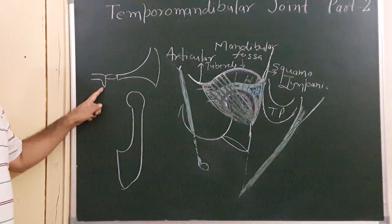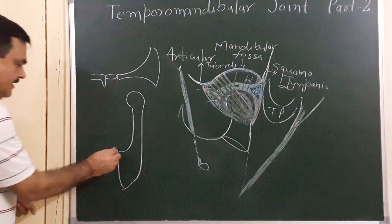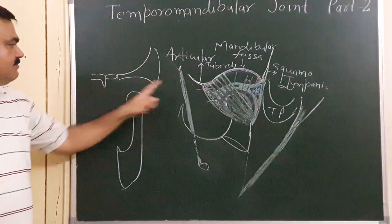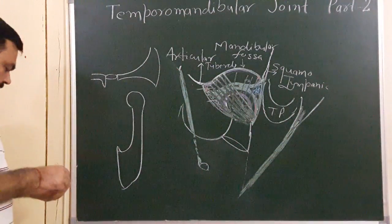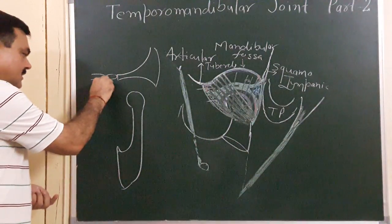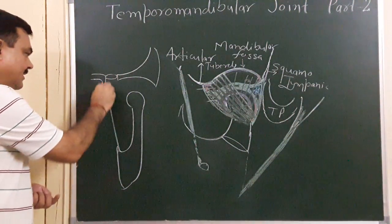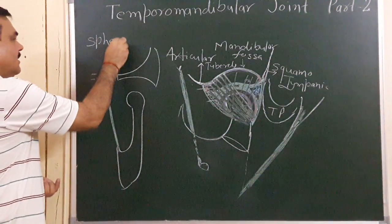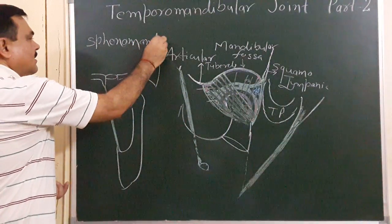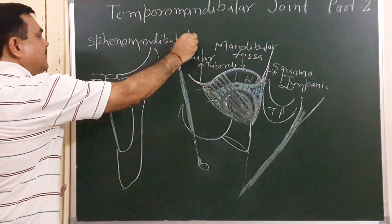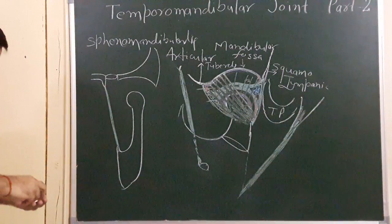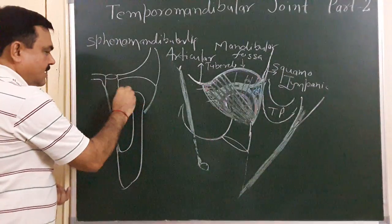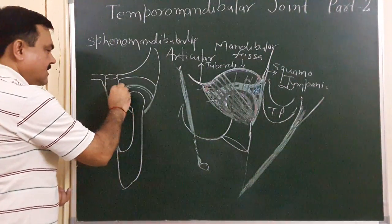In this diagram, this is the spine of sphenoid and here is the position of the lingula. From the spine of sphenoid to the lingula, this ligament is the sphenomandibular ligament. This is the capsule of the joint, and this is the articular disc of the joint.